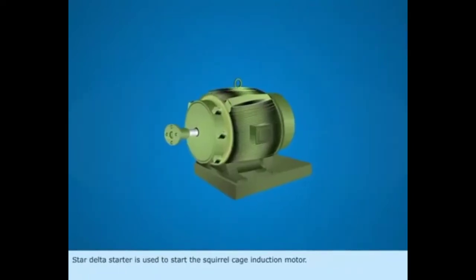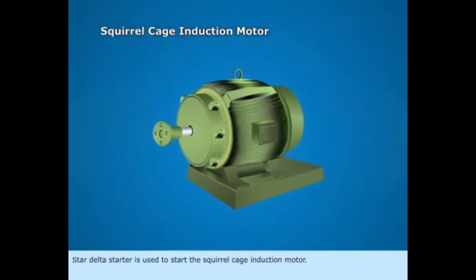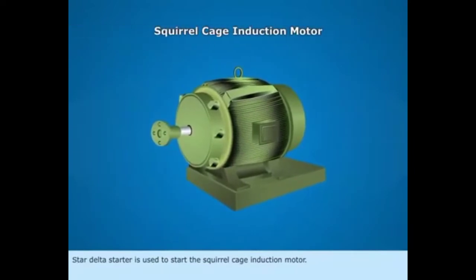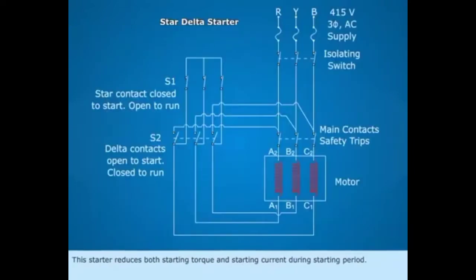Star delta starter is used to start the squirrel cage induction motor. This starter reduces both starting torque and starting current during the starting period.